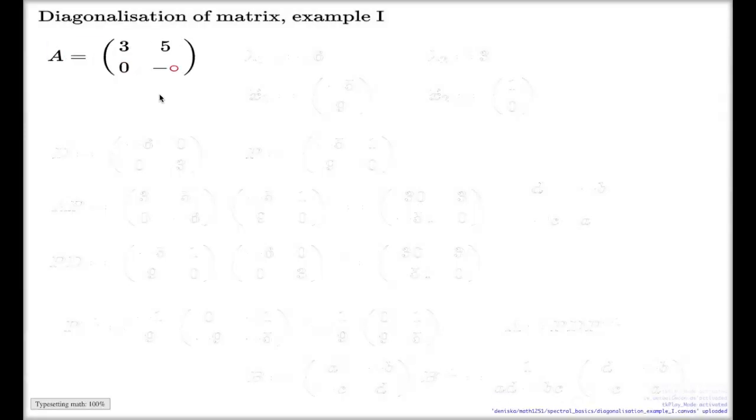Last week we had a matrix like this. It was Tuesday, a week ago. For this matrix, we have identified two eigenvalues. Here they are. And two eigenvectors. That's the information from Tuesday last week.